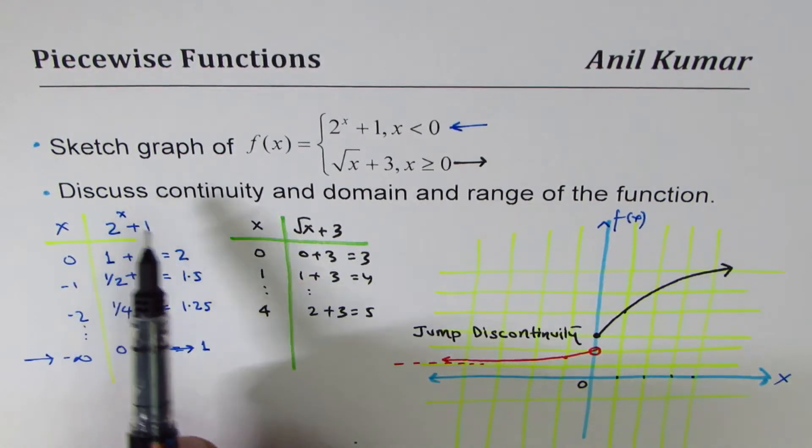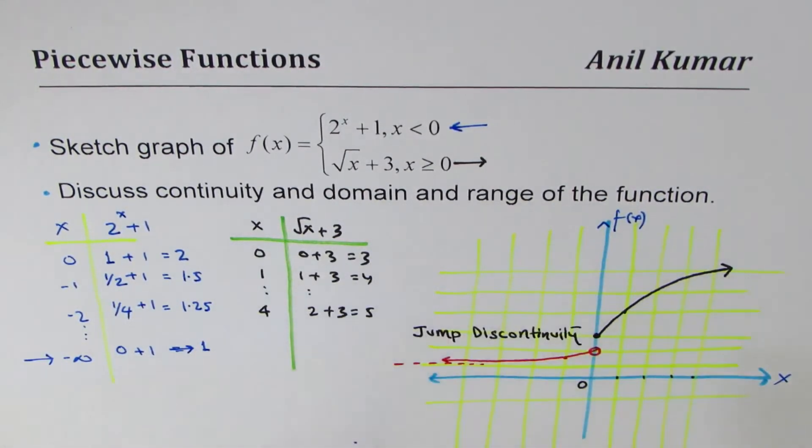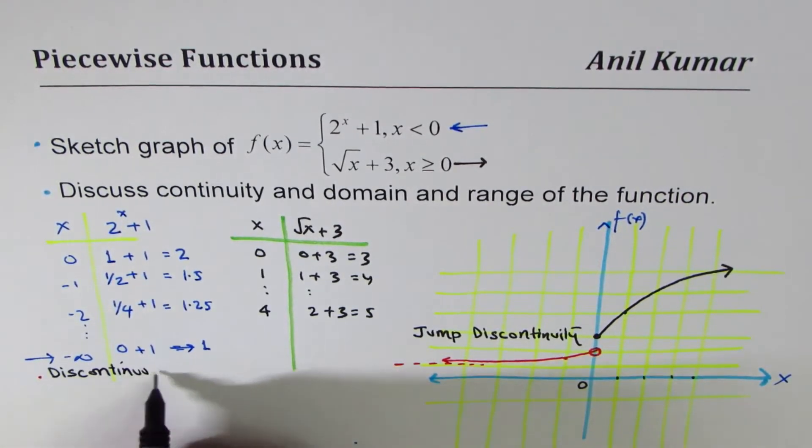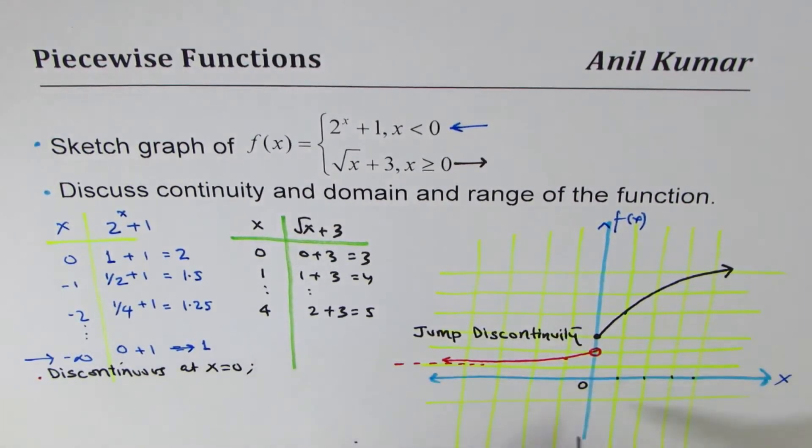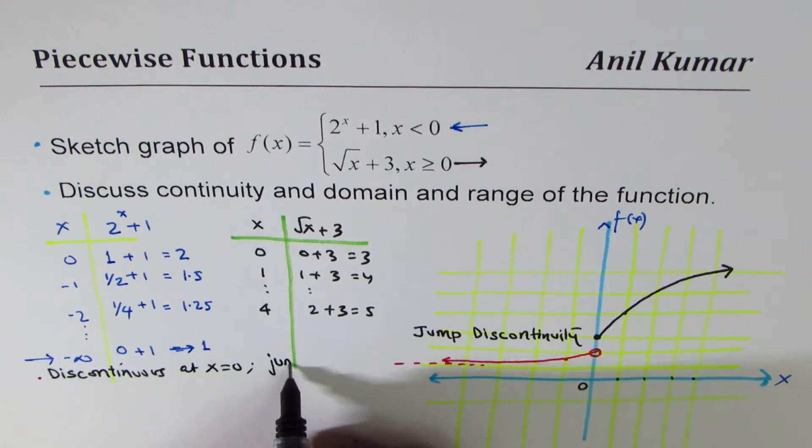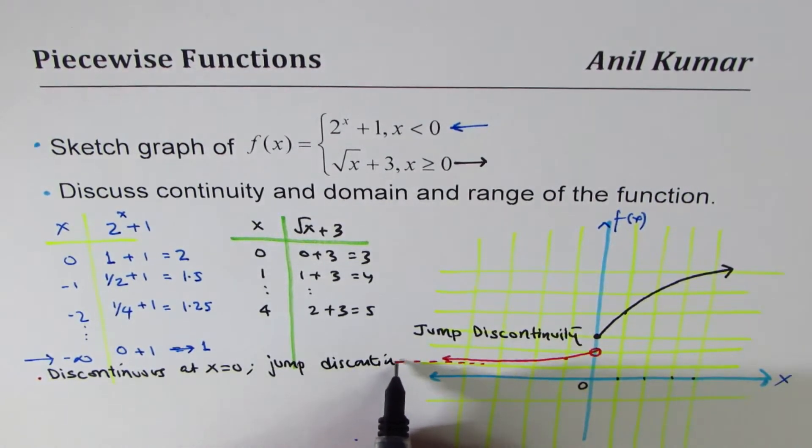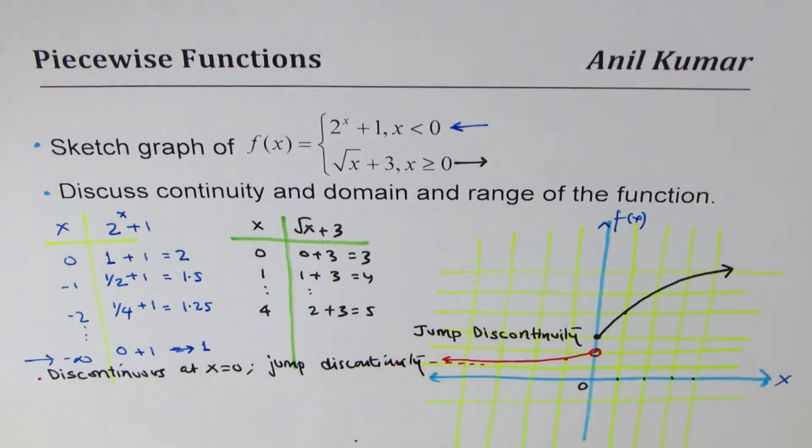Right. Now the question part 2 here is discuss continuity and domain and range of the function. So continuity: the function is discontinuous at x equals 0 as a jump discontinuity. Okay. How about domain and range? Well, there's no restriction on domain.